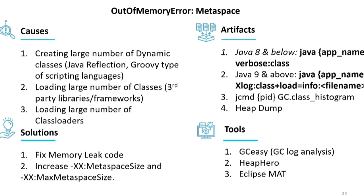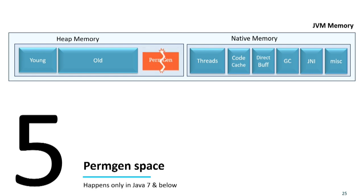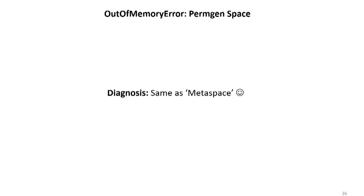The fifth type is 'Java lang out-of-memory error: perm gen space'. Is anyone running Java 7 or below? No. Then you don't have to worry about it. Before Java 8 — from version 1 through 7 — class definitions were loaded in perm gen space. Starting from Java 8, perm gen was removed and replaced with metaspace. When you try to load a lot of class definitions in Java 7 or below, you'll run into this problem. The diagnosis approach is exactly the same as for metaspace.